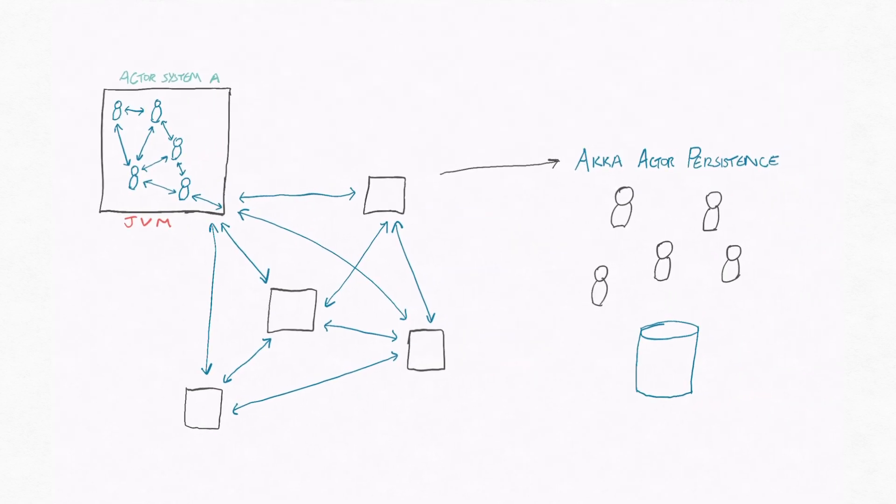Now, as performant as Akka can be, it can eventually hit a ceiling, as any application does when trying to scale it up. But Akka allows you to distribute the work across multiple nodes, each consisting of its own actor system, but being cluster-aware and knowing how to route messages to actors across them.